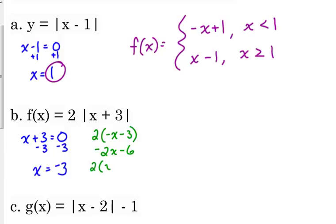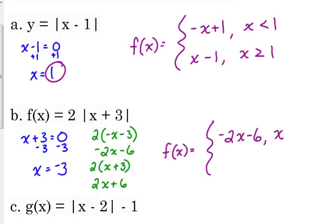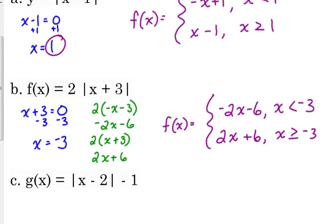For the second piece, we drop the absolute value bars and distribute the 2 to get 2x plus 6. In examples a and b, the two linear equations ended up being exact opposites of each other — same numbers, just opposite signs. Let's see if that changes with example c.